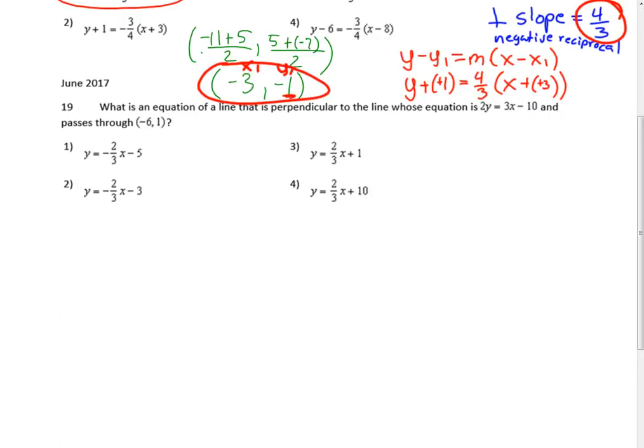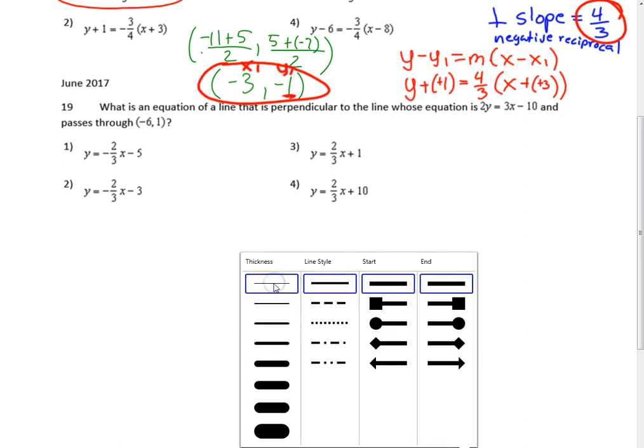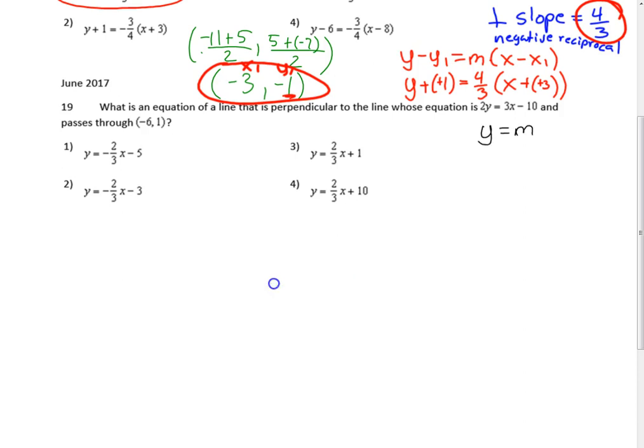Next is June 2017. Similar question but asked differently. What is an equation of a line perpendicular to 2y = 3x - 10 that passes through (-6, 1)? What's different is how we find the slope. We rewrite this in y = mx + b form. Dividing everything by 2 gives y = (3/2)x - 5.